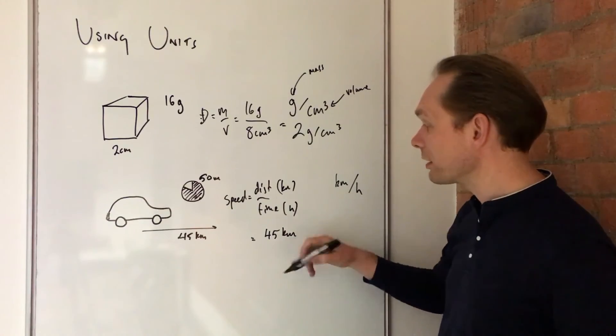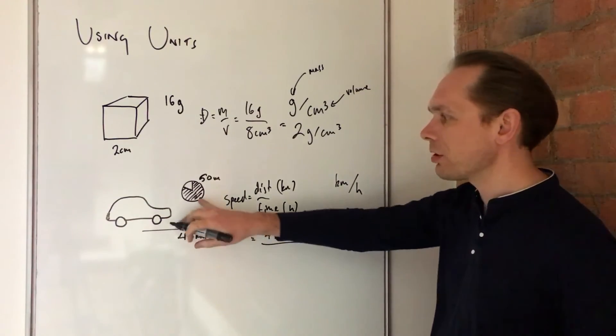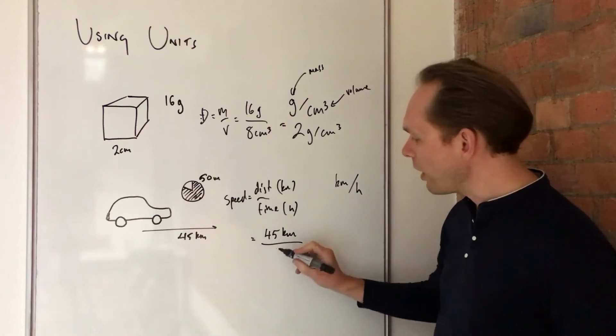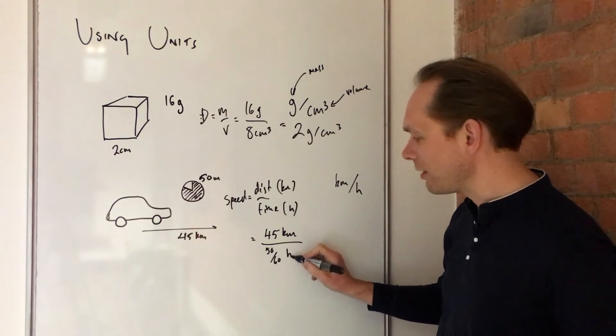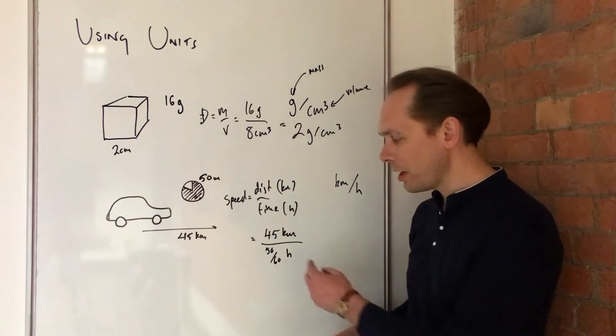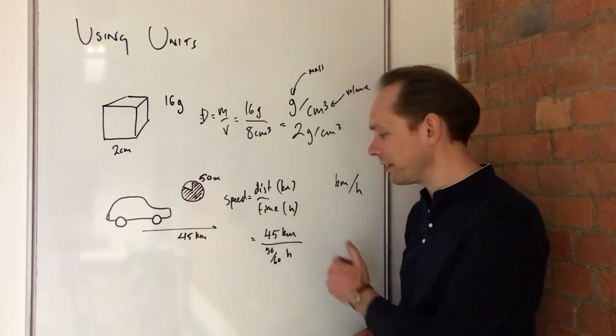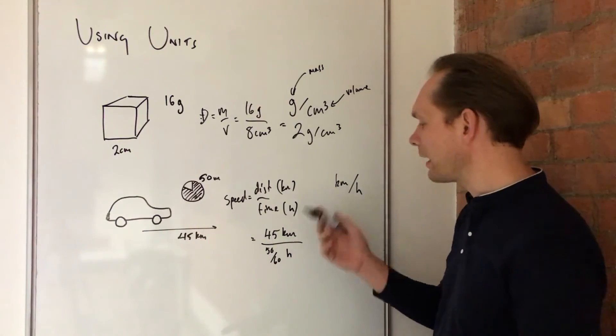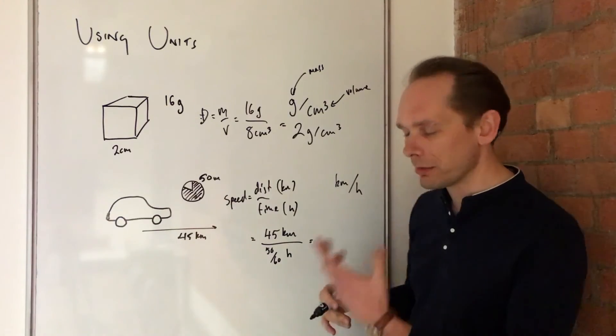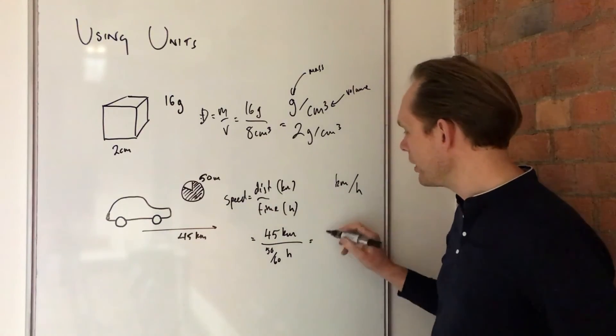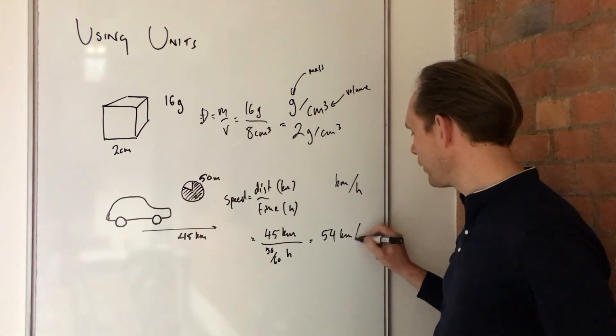But the time in hours is a bit harder, because we've been told it takes 50 minutes. Well, it's 50 sixtieths of an hour. Hopefully that makes sense. A minute is a 60th of an hour, so 50 sixtieths. So if you do all of that, actually, you might need a calculator, but you can kind of reason it through. You're going to end up with 54 kilometers per hour.